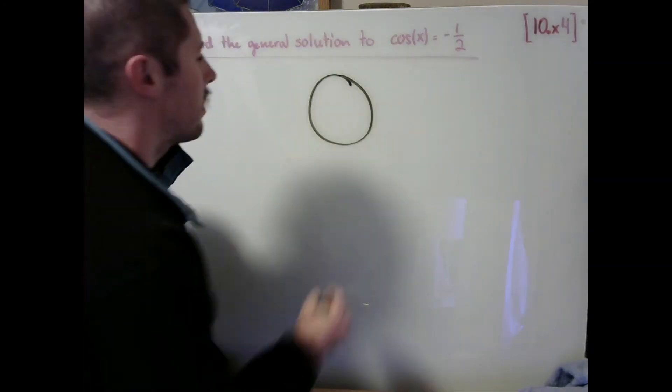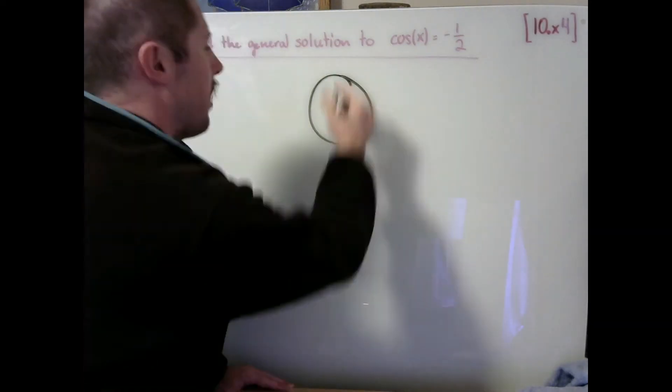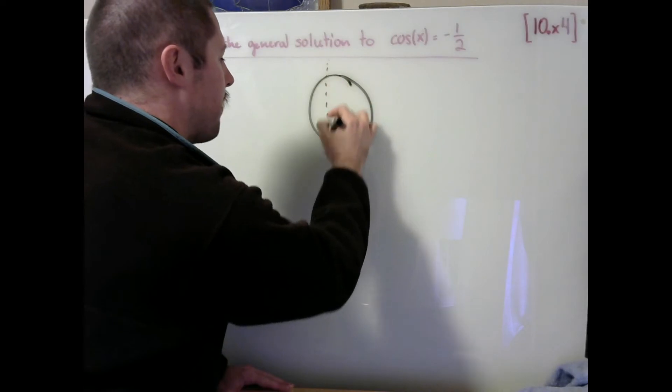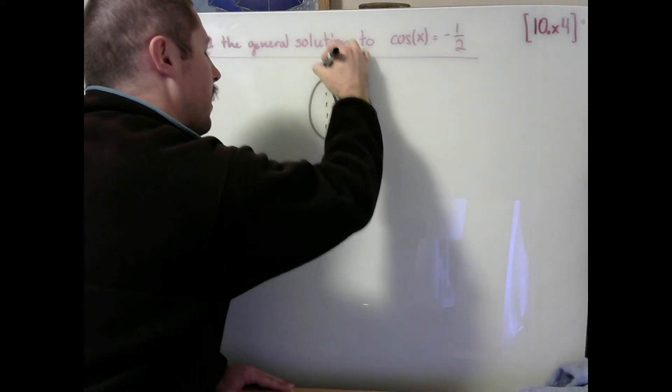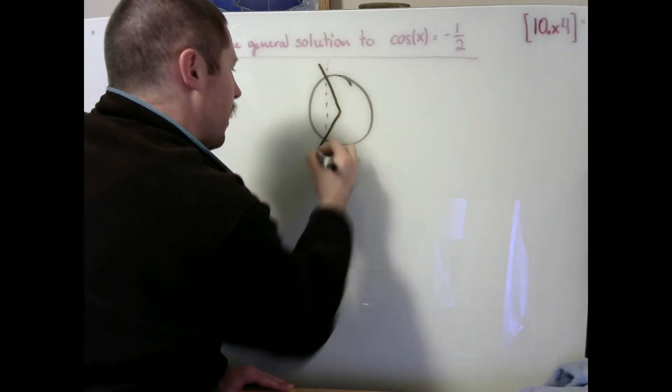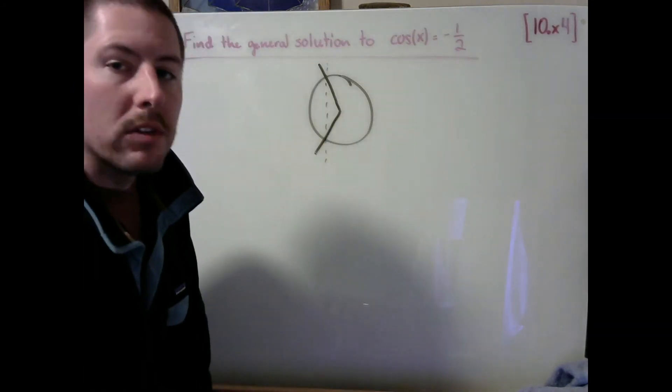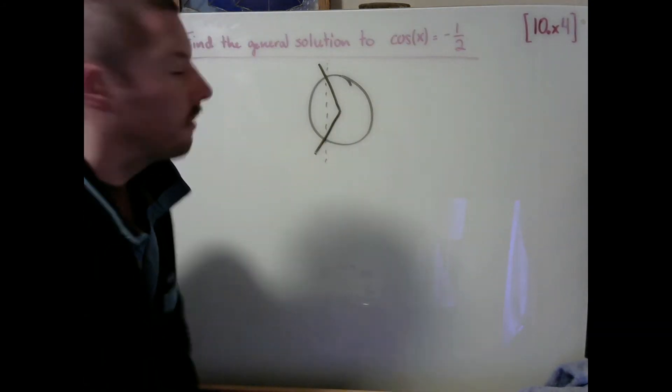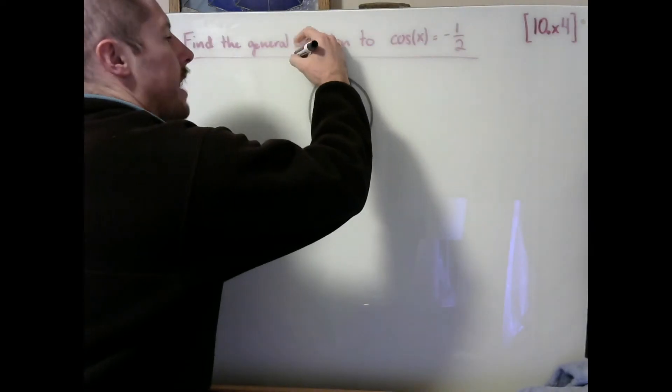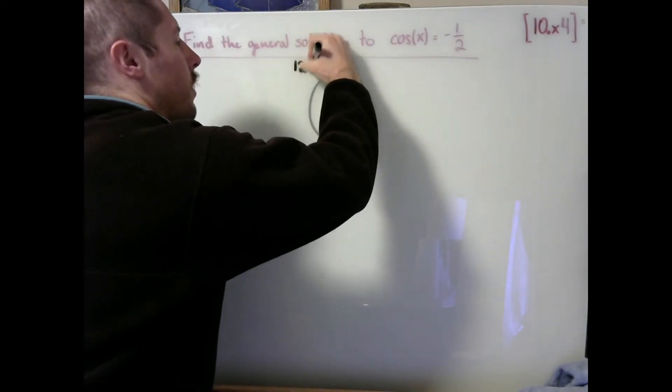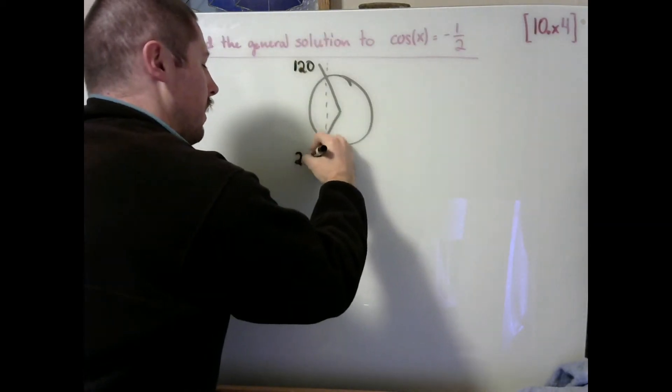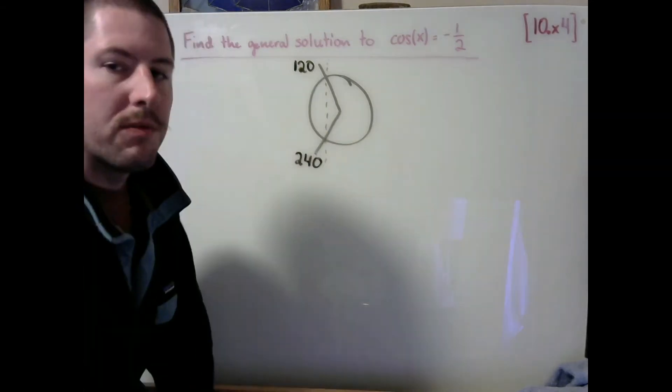In our unit circle, if I would like to arrive at a width of negative 1 half, I'm picturing these are the two angles that will result in a cosine value of negative 1 half. I recognize these as 120 degrees and 240 degrees.